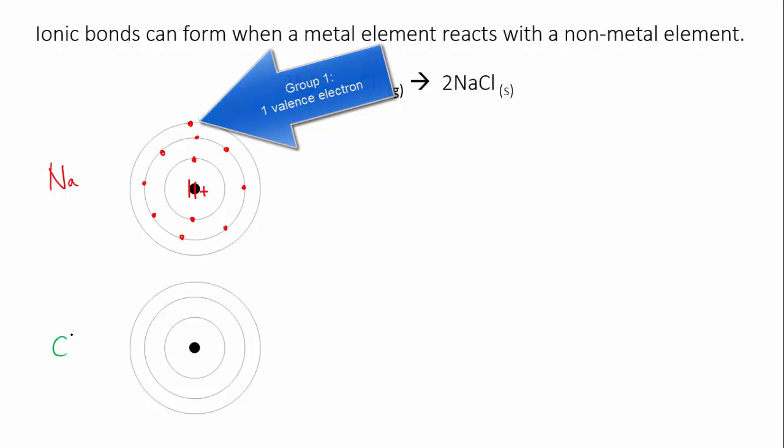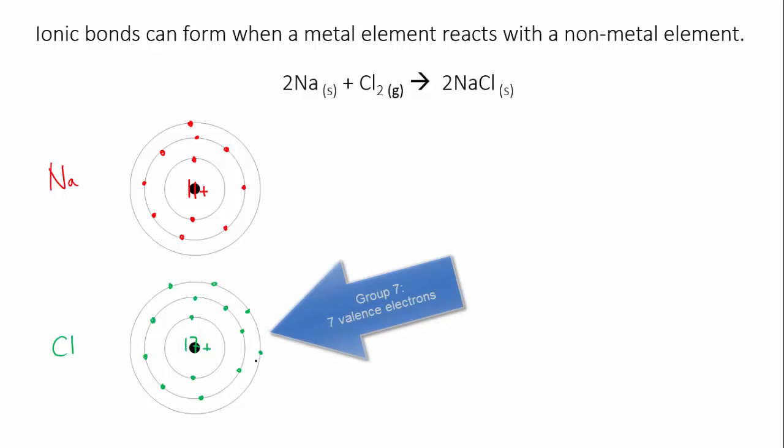Chlorine is in group seven of period three and is element number 17. So I draw in its electrons and it has seven valence electrons. I'm ignoring the fact that chlorine is actually a covalent molecule for the moment. We just want to look at what happens to the individual atoms.